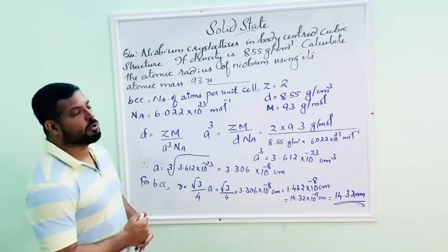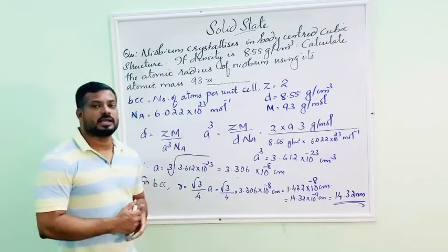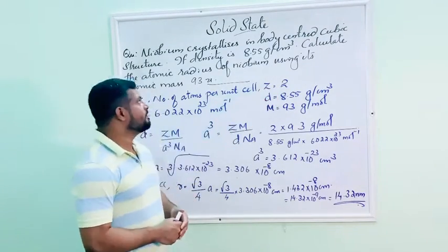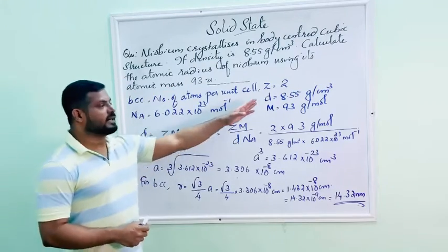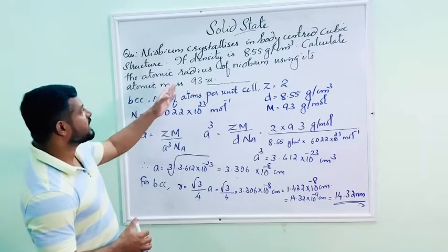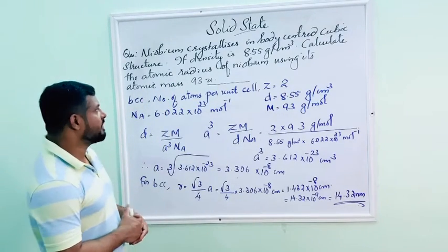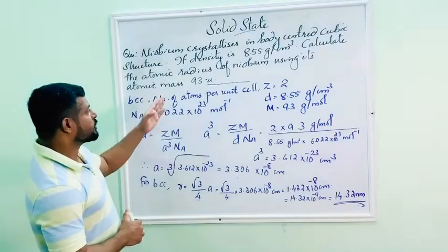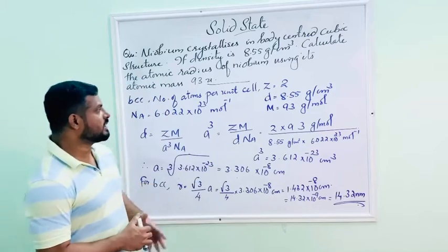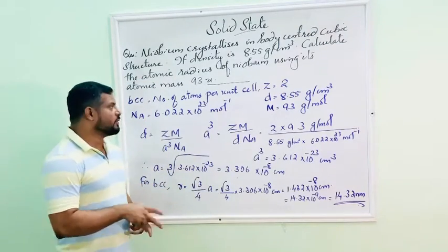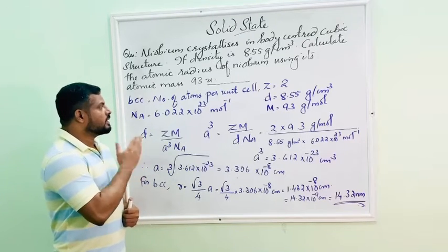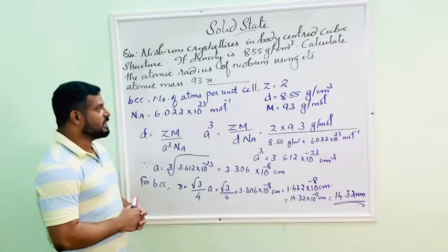The given question mentions body centered cubic structure. So, that means number of atoms per unit cell in BCC equals 2. Density D is given 8.55 gram per centimeter cube. We want to calculate atomic radius. Atomic mass is given 93U, that is 93 gram per mole. Avogadro number, we already know, 6.022 into 10 raise to 23 mole inverse.